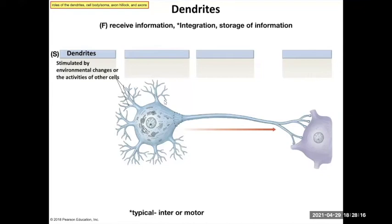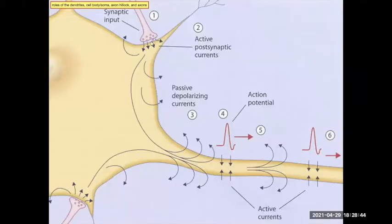These are the dendrites. The structure of these are the dendrites. The function is to receive information, integrate that information, and maybe even store it as memory in a way we're not going to get into. That is your dendrites receiving information, either from the environment or other neurons.